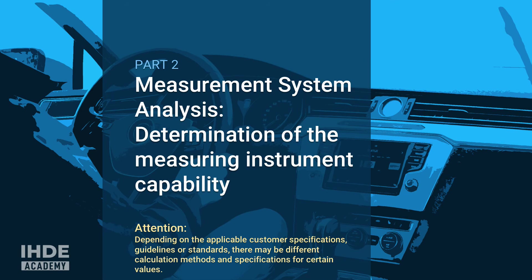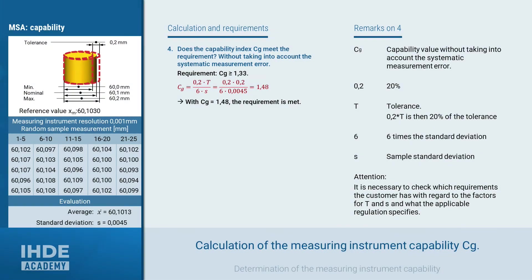Now we come to the measurement system analysis, where we calculate the measuring instrument capability and evaluate the result. Note that depending on the applicable customer specifications, guidelines, or standards, there may be different calculation methods and specifications. The capability index Cg does not yet take the systematic measurement error into account. Cg shall be equal to or greater than 1.33, and is calculated as 0.2 times the tolerance divided by 6 times the standard deviation. Inserting the respective values gives a Cg of 1.48, which fulfills the requirement.